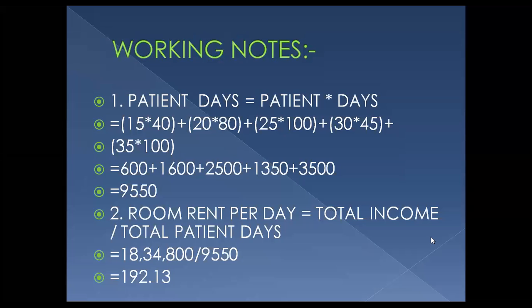Working Note 1 — Patient Days is equal to: 15 multiplied by 40, plus 20 multiplied by 80, plus 25 multiplied by 100, plus 30 multiplied by 45, plus 35 multiplied by 100. This gives us 600 plus 1600 plus 2500 plus 1350 plus 3500.